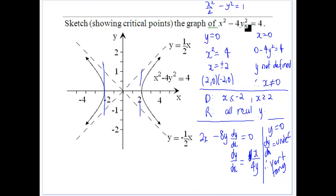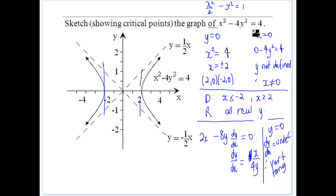Now let's look at x squared minus 4y squared equals 4. We establish the same three things. For critical points: when y equals 0, x equals plus or minus 2. When x equals 0, we can't define it — so there's nothing on the y-axis. For the domain, x can only be less than negative 2 or greater than positive 2, because x squared must be greater than 4. Because x squared is greater than 4, we get all real values of y — no restriction. Differentiating gives dy/dx equals x on 4y.